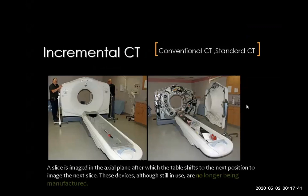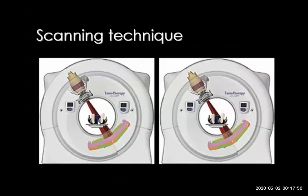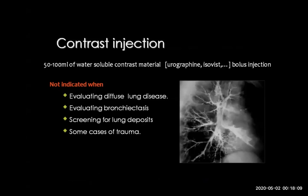The CT scanner has the table here, with detectors and tubes located inside. The tube is just an X-ray tube, the beam passes through the patient to the detectors, and there is rotation of both tube and detector simultaneously. For contrast, we usually use 50 to 100 cc of water-soluble contrast, roughly 1 cc per kg — for example, 70 cc for a 70 kg patient. We don't use contrast for diffuse lung diseases like interstitial lung disease, bronchiectasis, or lung metastasis screening.